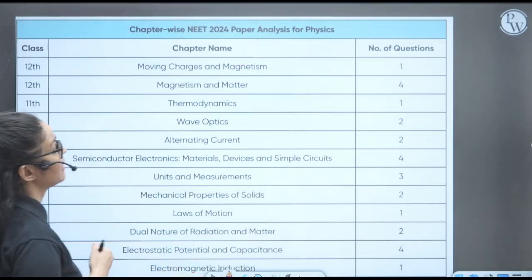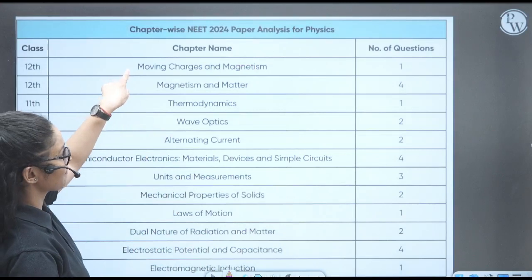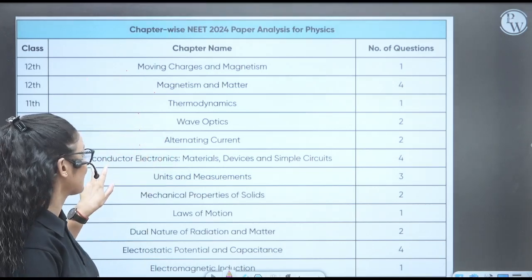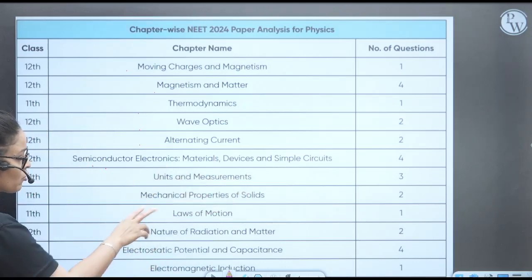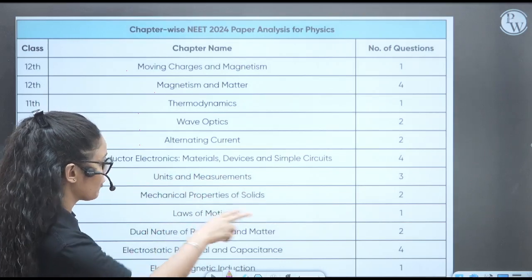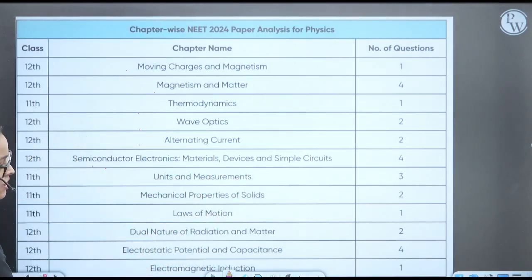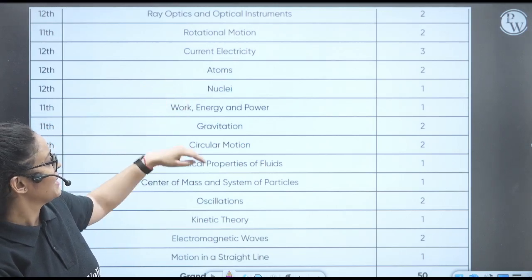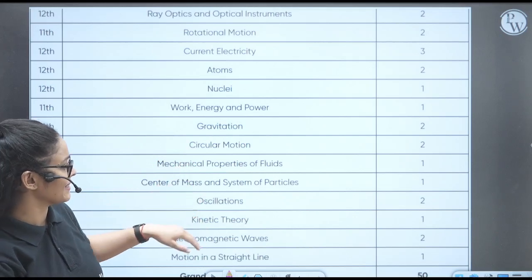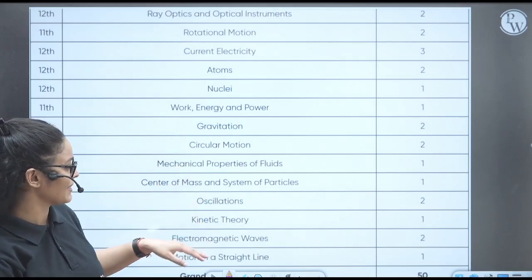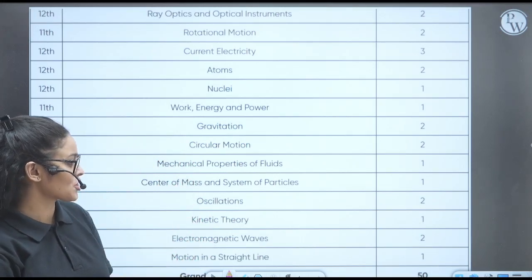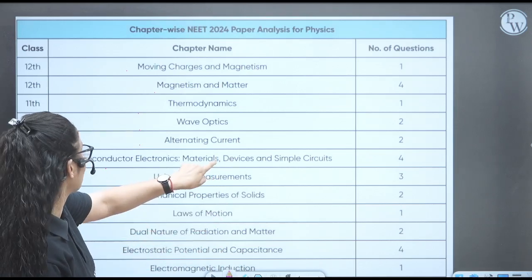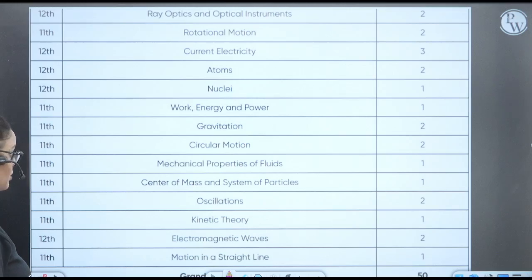Next topic is the analysis of physics chapter-wise. So from moving charges and magnetism - one question. Magnetism and matter - four questions. Thermodynamics - one. Wave optics - one. AC - two questions. Semiconductor - four questions. Units and measurement - three. Mechanical properties of solids - two questions. Laws of motion - one. Dual nature of radiation and matter - two questions. Electrostatic - four. Electromagnetic induction - one question. Ray optics - two questions. Rotational motion - two. Current electricity - three. Atoms - two. Nuclei - one. Work energy and power - one. Gravitation - two. Circular motion - two. Mechanical properties of fluid - one. Center of mass and system of particles - one. Oscillation - two. Kinetics - one. Electromagnetic wave - two. Motion in straight line - one. So you can see from electricity they have asked three questions, from electrostatic potential they have asked four questions, from semiconductor they have asked four questions, magnetism and matter - four questions. These chapters are having good weightage and they had good weightage in NEET 2024 exam.